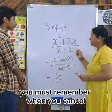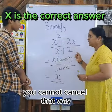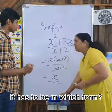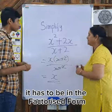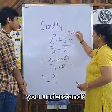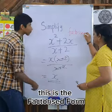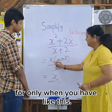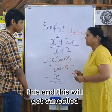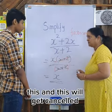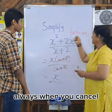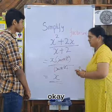So you must remember when you cancel, you cannot cancel that way. It has to be in the factorized form — you understand? This is the factorized form. Only when you have like this, this and this will get cancelled. Got it? Yes. So always when you cancel, remember the factorized form. Okay?